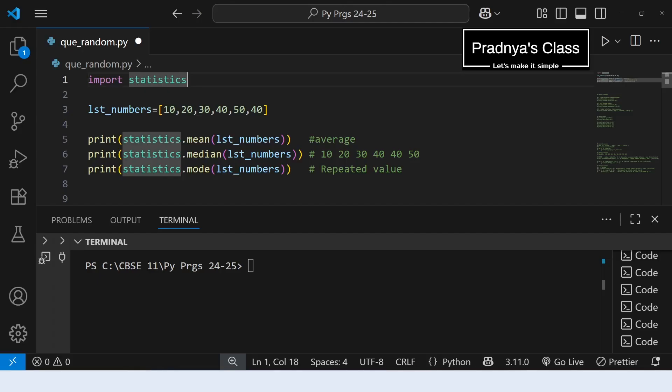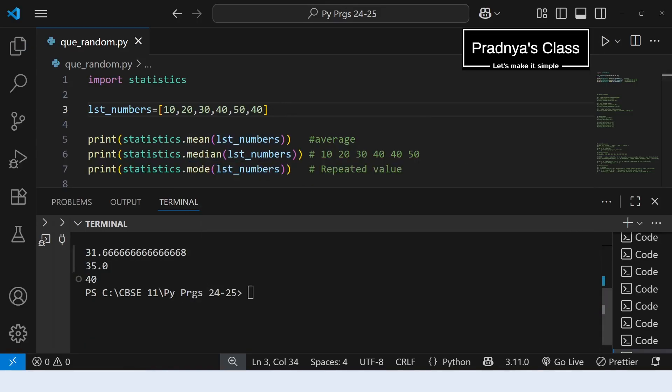Alright we have imported the statistics module using import statement. And here is one list on which we are going to apply these three functions: mean, median, mode. Let's execute and check out the output. Mean gives the average. So we got it. Median function gives the middle value. How it is calculated? First the values will get sorted. And based on the criteria whether we have even number of elements or odd number of elements, the median will get calculated. And what about this mode function? It gives the repeated value. We can see 40 is repeated two times. That's why it is the mode of the list.